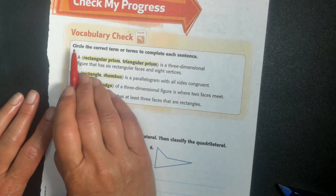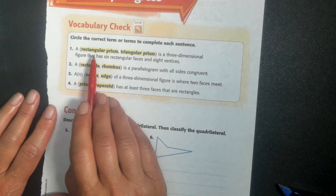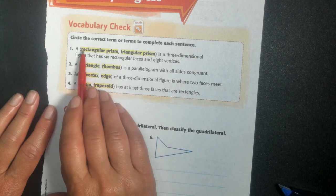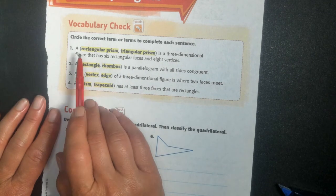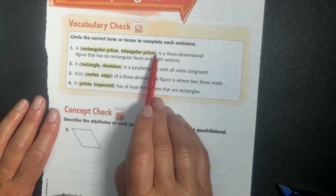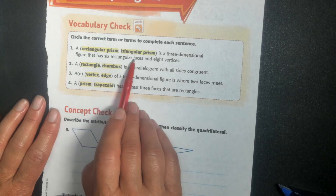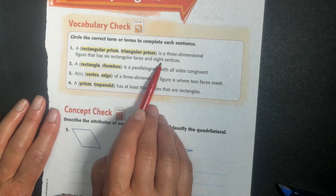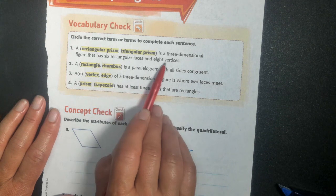So circle the correct term or terms to complete each sentence. I'm looking at, do I want rectangular prism or triangular prism? My regular sentence is a blank is a three-dimensional figure that has six rectangular faces and eight vertices. So if you could go back in your notes and check which one of the three-dimensional figures that we looked at had six rectangular faces and eight vertices.